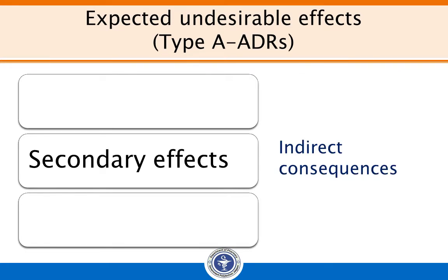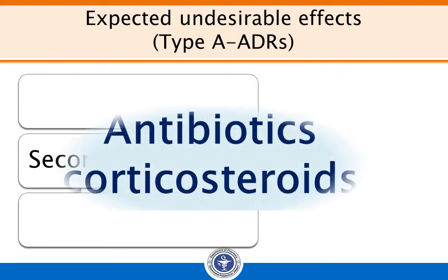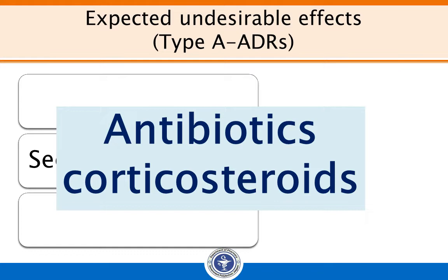Another expected undesirable effect is secondary effects. These are indirect consequences of the main pharmacodynamic action of the drug. For example, development of superinfection after suppression of bacterial flora by antibiotics, and weakening of host defenses after the use of corticosteroids. Like side effects, these secondary effects may occur even when the drug is used at therapeutic doses, but can be predicted from the pharmacological profile.